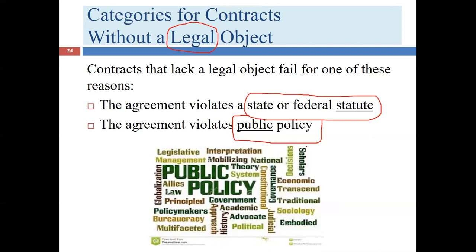As the pregnancy progressed and especially at the time of delivery, she started having second thoughts: was it really right to give up this child who was her biological child? When she gave birth she decided this wasn't the best situation and considered the child her own, while the husband and wife considered the child theirs. The surrogate mother decided to keep the child; the couple who had hired her wanted sole custody.